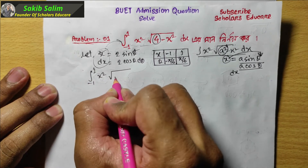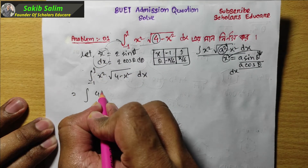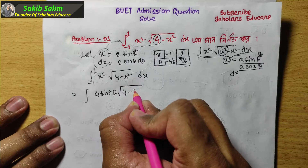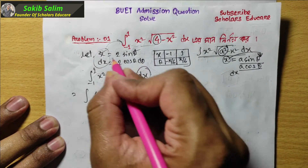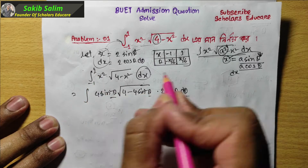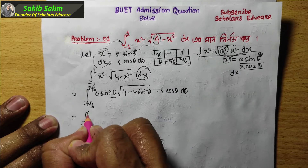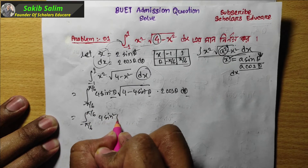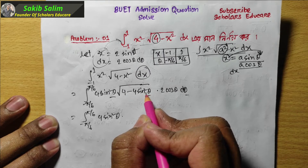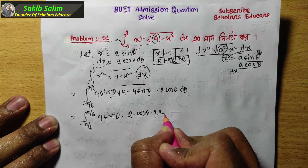The integral becomes x times the square root of 4 minus x squared dx. Substituting x equal to 2 sin theta and dx equal to 2 cos theta d theta, with limits from minus pi by 6 to plus pi by 6, we get 4 sin squared theta into the square root, and then 2 cos theta into 2 cos theta d theta.